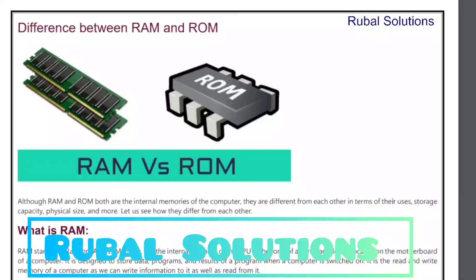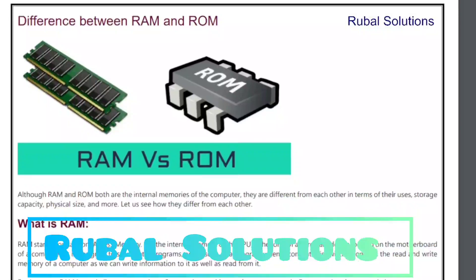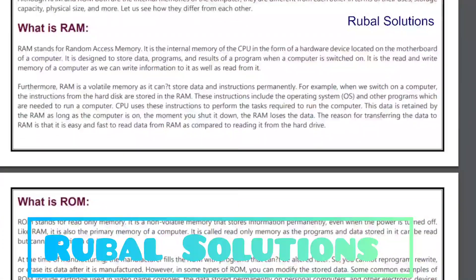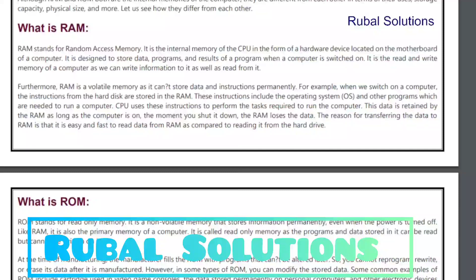What is RAM? RAM stands for Random Access Memory. It is internal memory of the CPU in the form of a hardware device located on the motherboard of the computer. It is designed to store data, programs and results of programs when a computer is switched on. It is the read and write memory of the computer as we can write information to it as well as read from it.